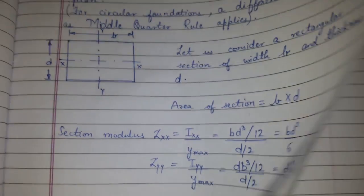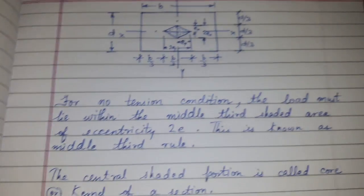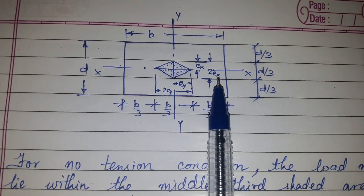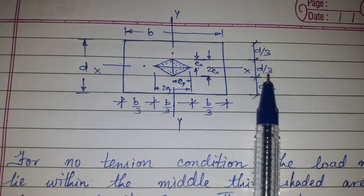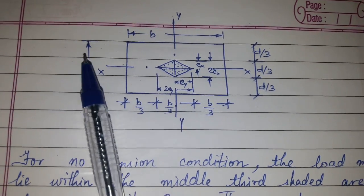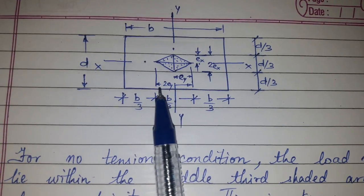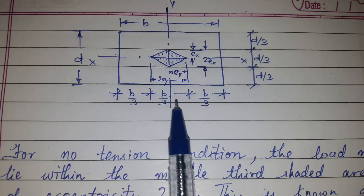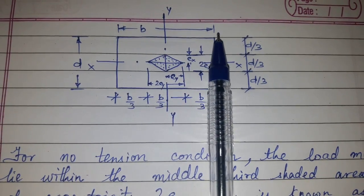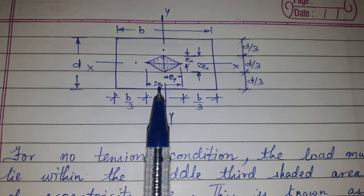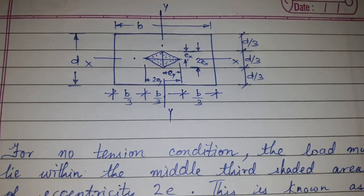Now, if we draw what we got on the rectangular cross section, we get 2ex equal to d/3 where d is the thickness, and 2ey equal to b/3 where b is the width.